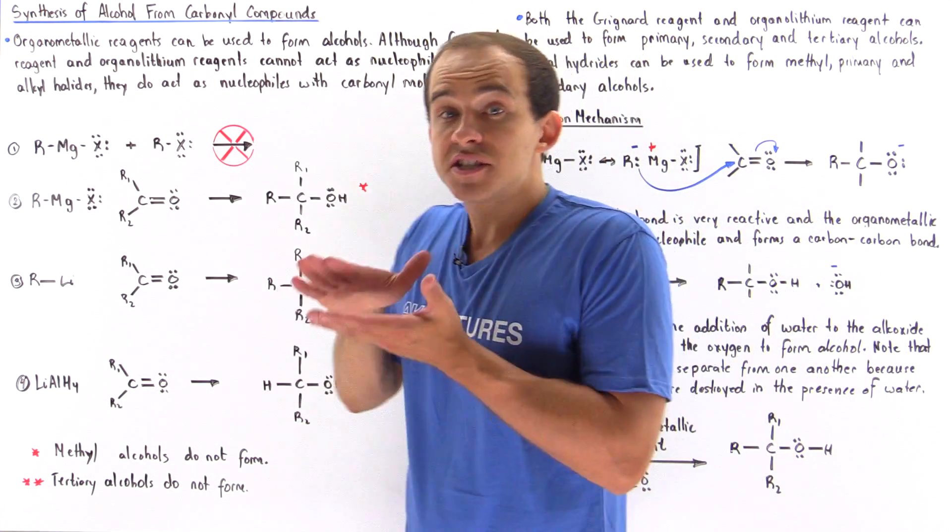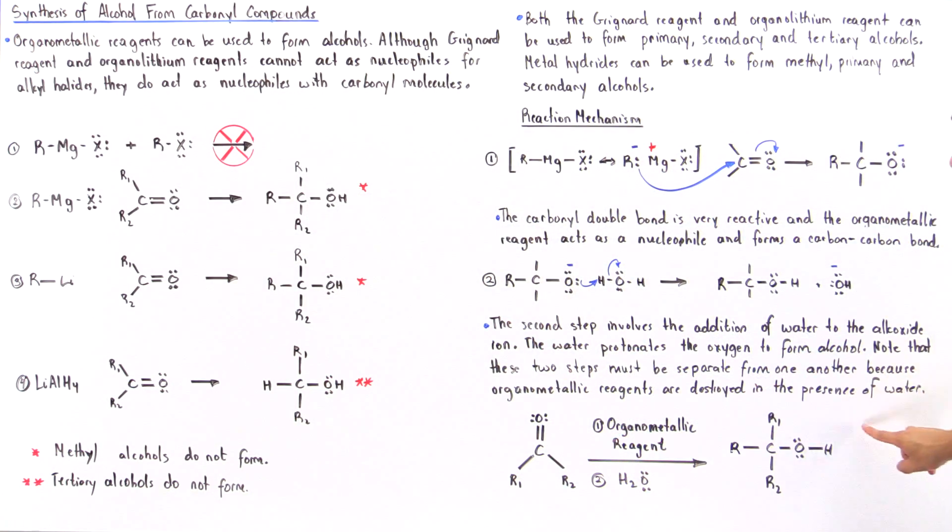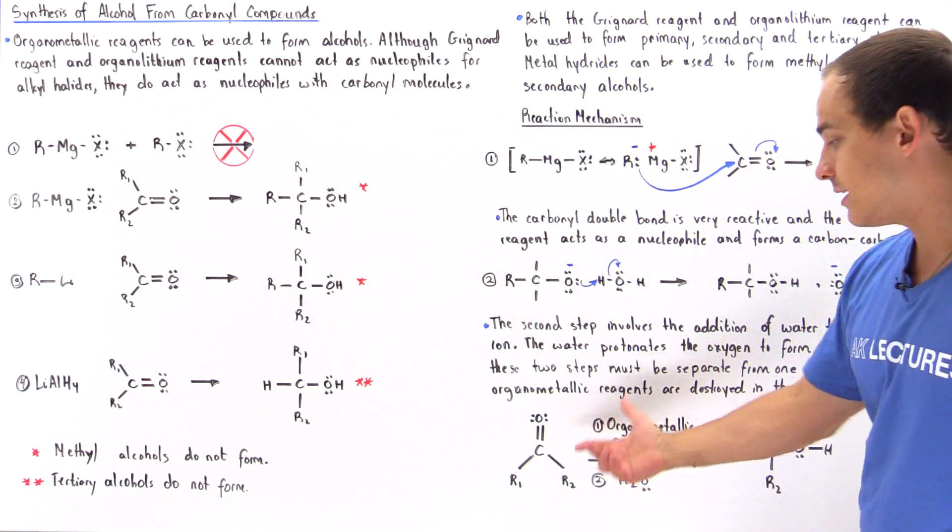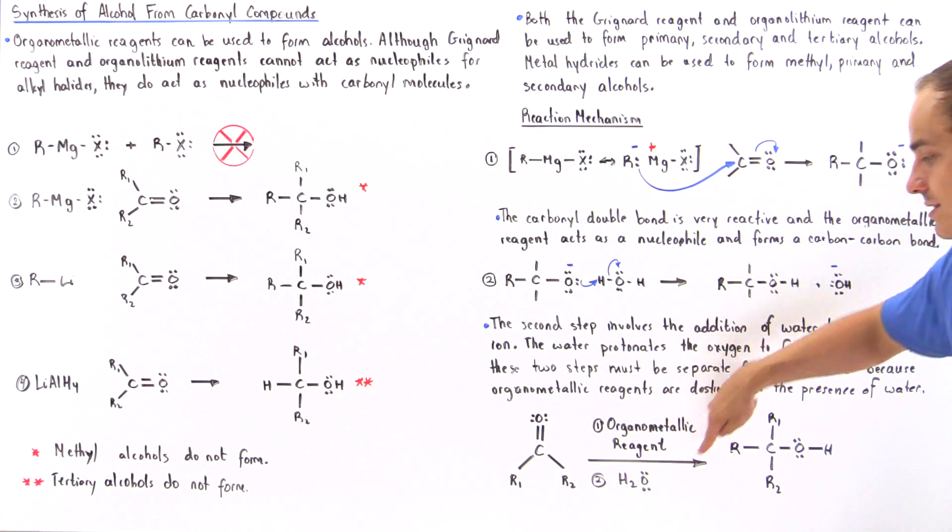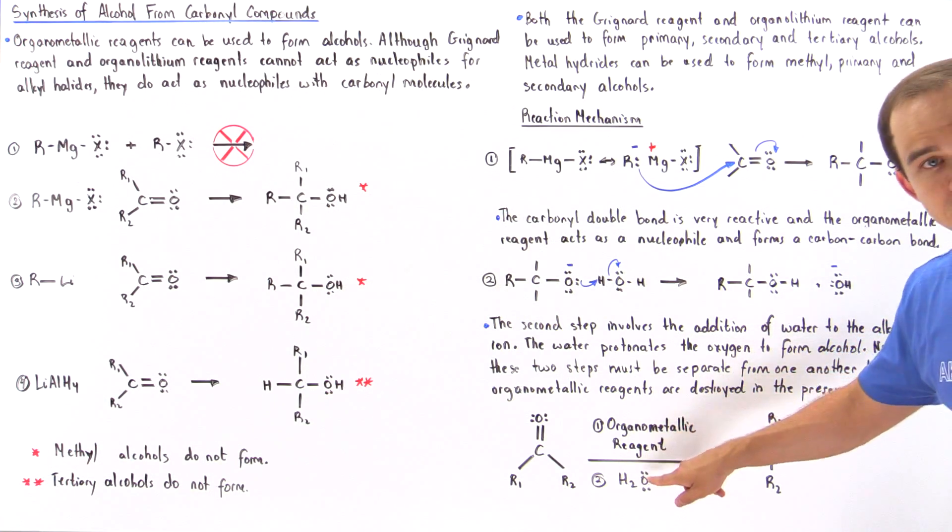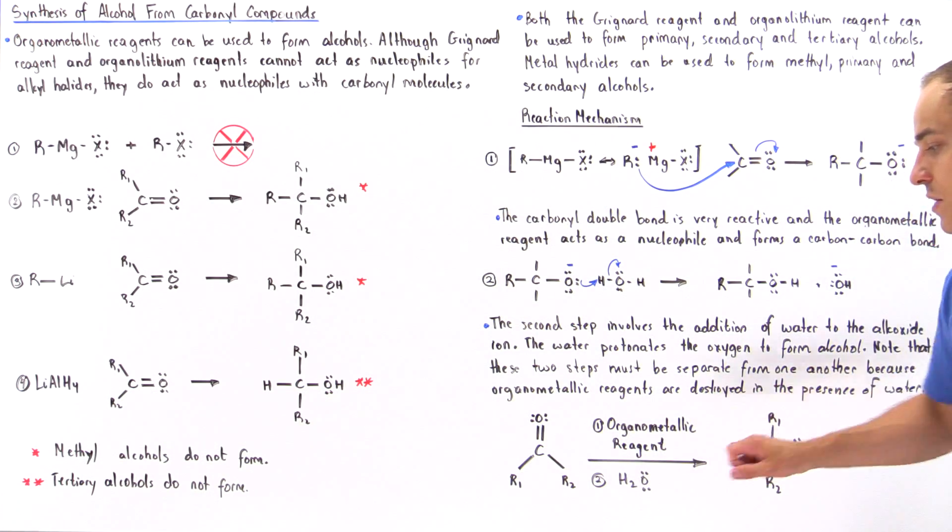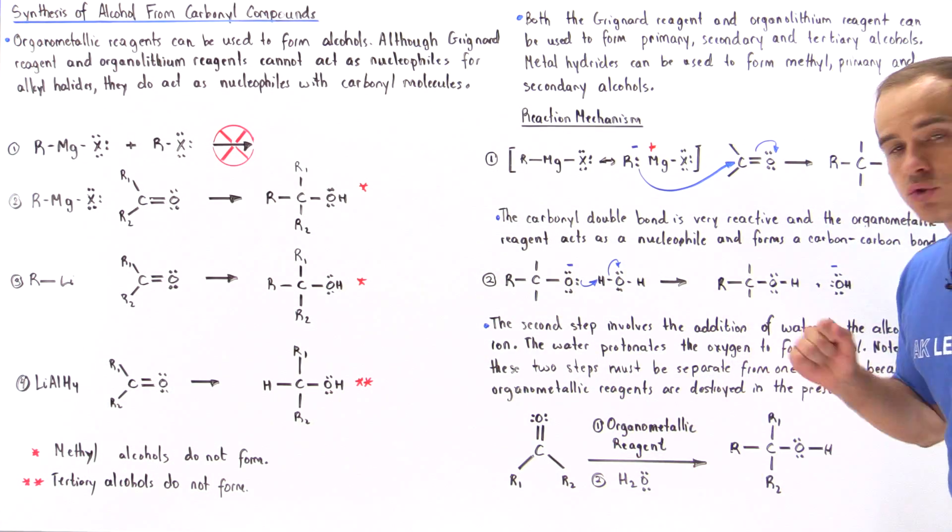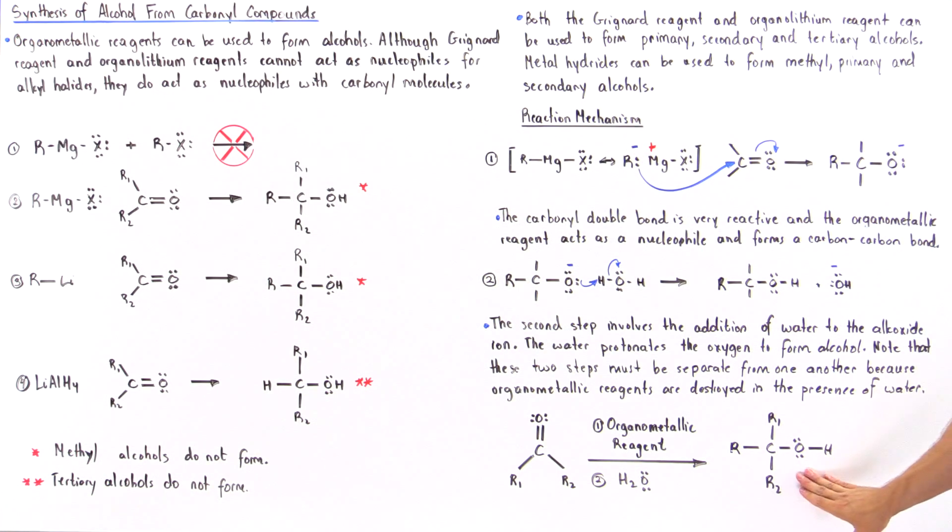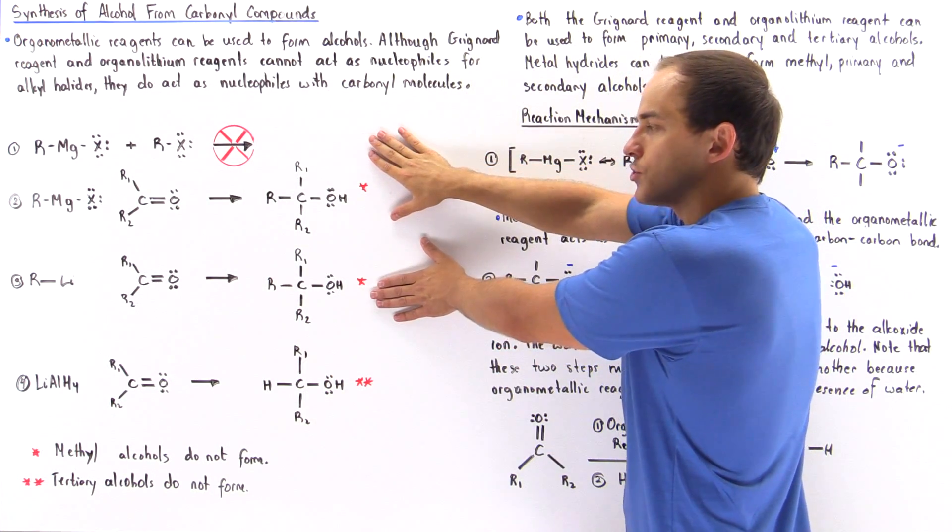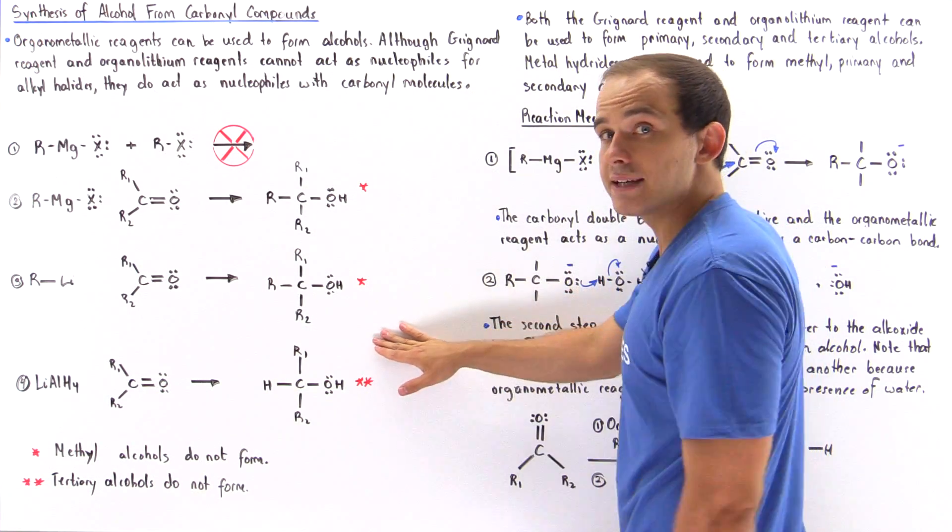And the way we symbolize the separation of step 1 from step 2 is by using the following symbolism. So we have our ketone, well actually, it could be a carbonyl molecule, it could be formaldehyde, aldehyde, or ketone. We place this in the presence of step 1 where we add the organometallic reagent in the presence of our solvent, let's say ether. And the second step, step number 2, involves the addition of water. So this 1 and 2 are important because they symbolize the separation of these steps. And so, after these two steps take place via the following reaction mechanism, we form our final product, the alcohol. And once again, depending on the type of groups that we have, we can either form the primary, secondary, or tertiary alcohol or the methyl, primary, and secondary alcohol product.